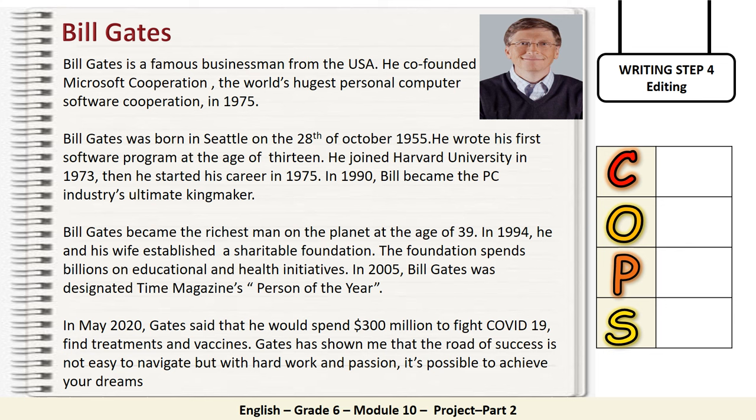Let's start editing. I need you to read to see if you need to capitalize the first letter of any word. Super! You have to use the uppercase letter O in October because it's a month. And now let's read one more time to check the organization. Very good — you've organized your biography correctly.